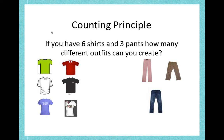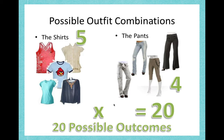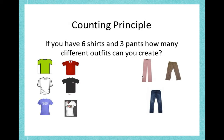Now let's have a look at this. If you have six different shirts and three different pants, how many different outfits can we have? Please pause this lesson and think about it. The answer is six multiplied by three — eighteen outfits. There are six different shirts and three different pants; we multiply those together and get eighteen outfits.